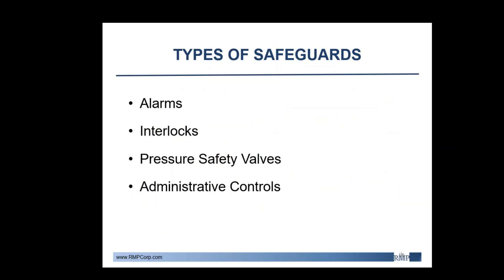Let's start off with the types of safeguards. This is not a complete list, but these are certainly the most common types of safeguards you will see during a PHA. Starting off with alarms, these would usually be the safeguards you see the most during the PHA as they are commonly used in all industries such as oil and gas, ammonia refrigeration, etc. You might see a low flow alarm on the discharge of your pumps to alert your operators to prevent a cavitation or deadhead scenario.